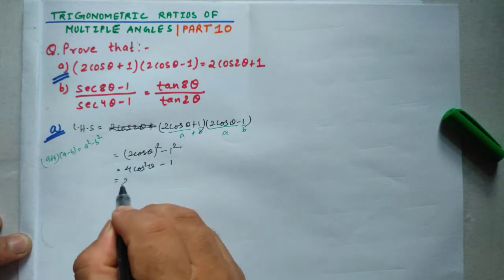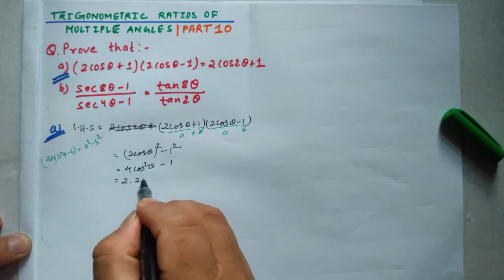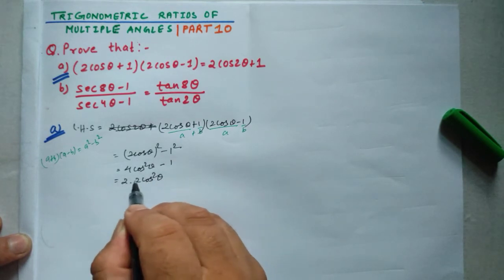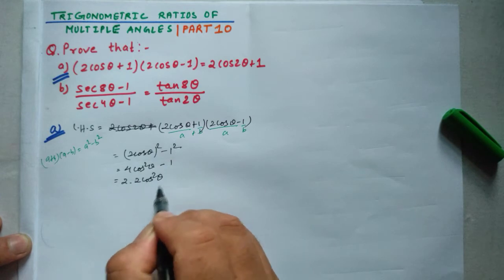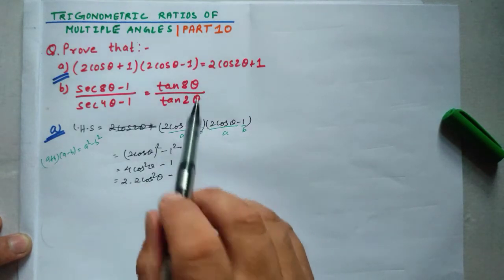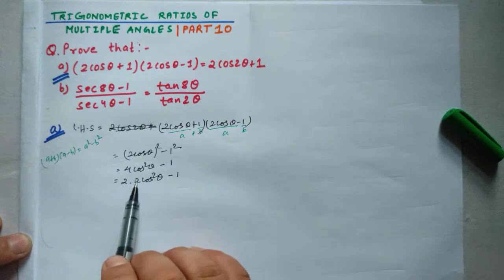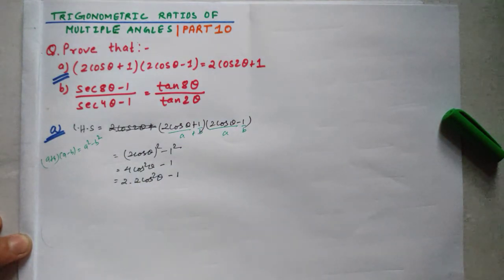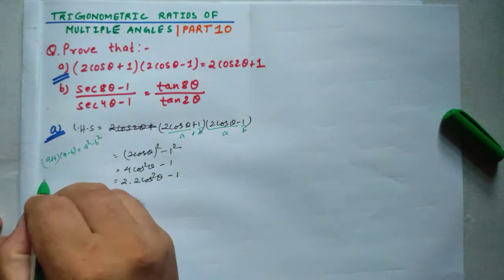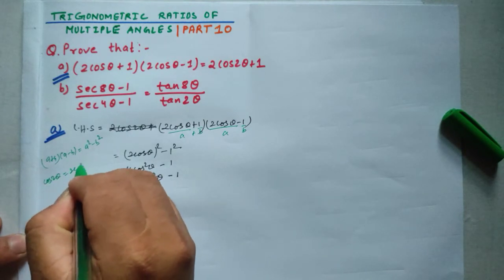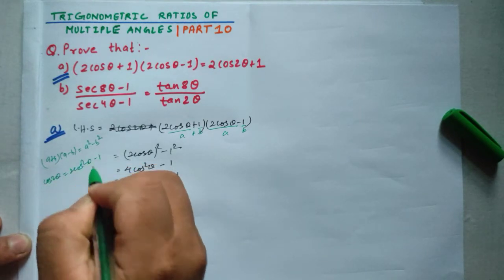Now, 4cos²θ = 2 × (2cos²θ - 1) + 2. We use the formula cos2θ = 2cos²θ - 1, so this becomes 2cos2θ.